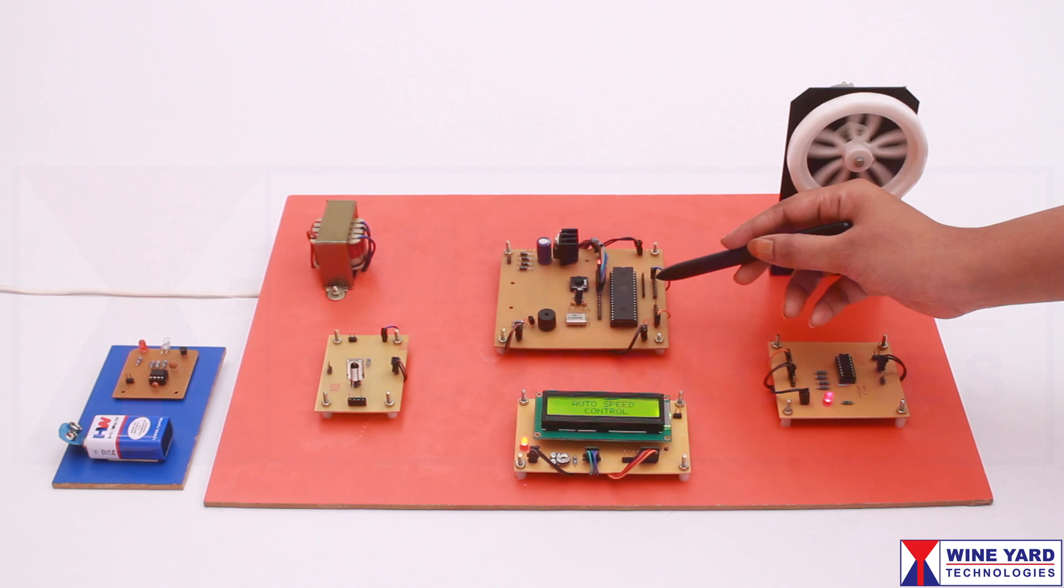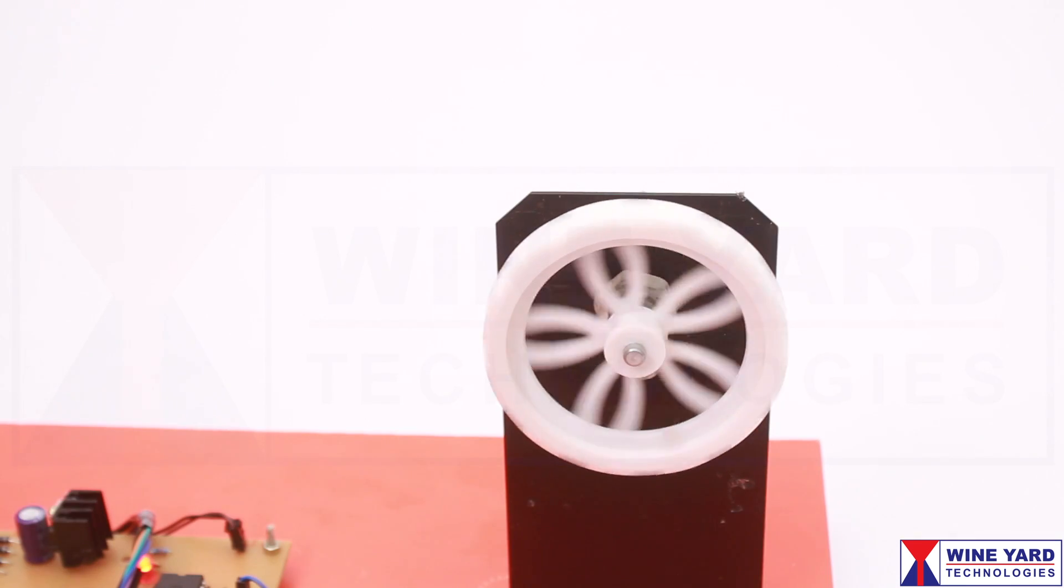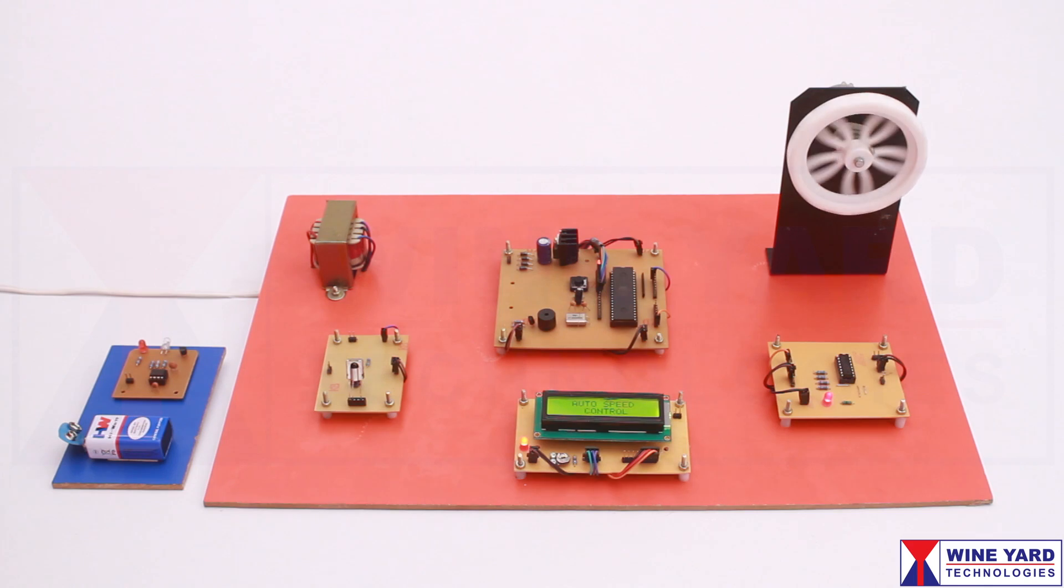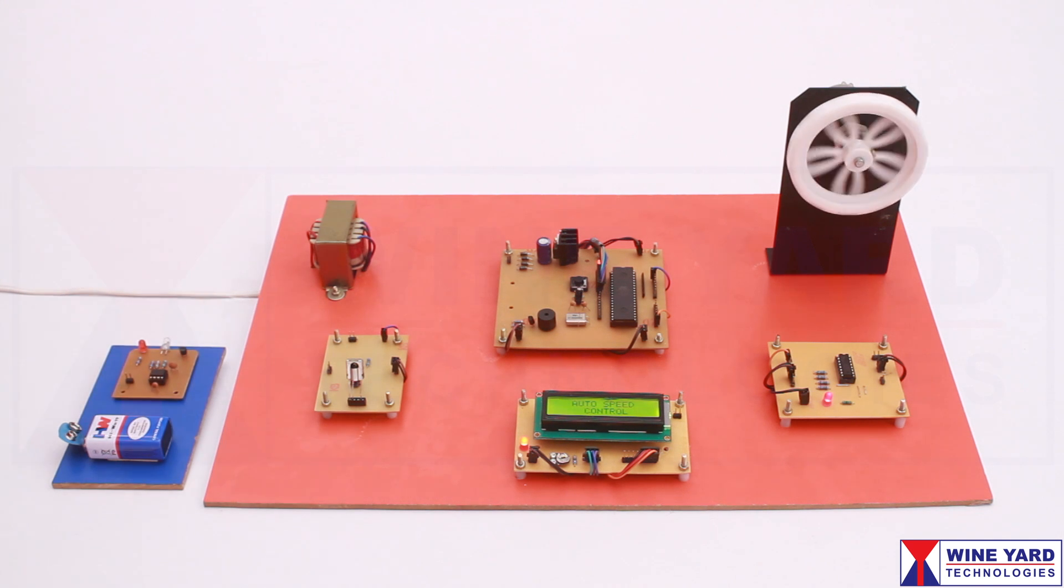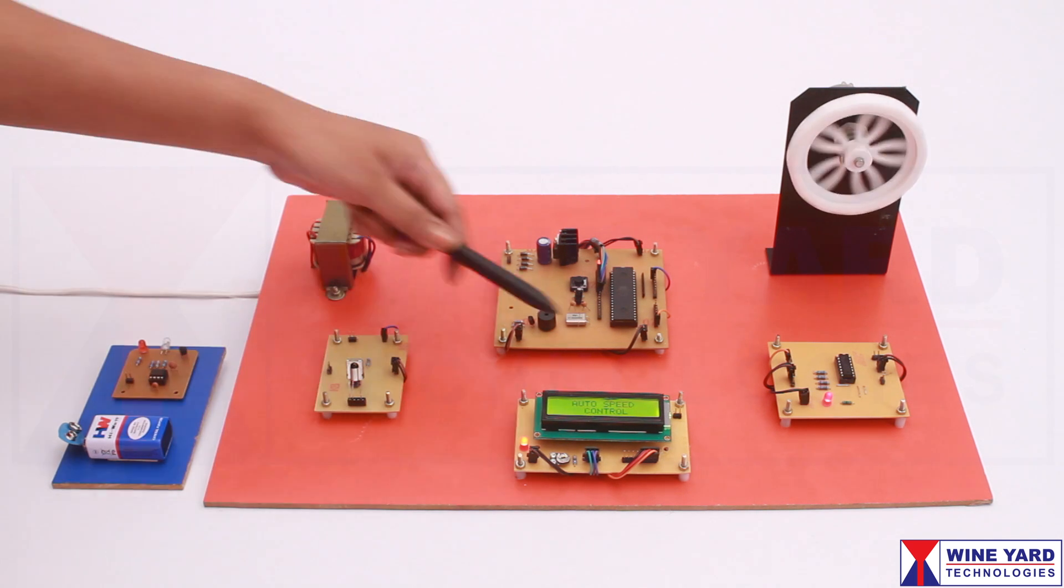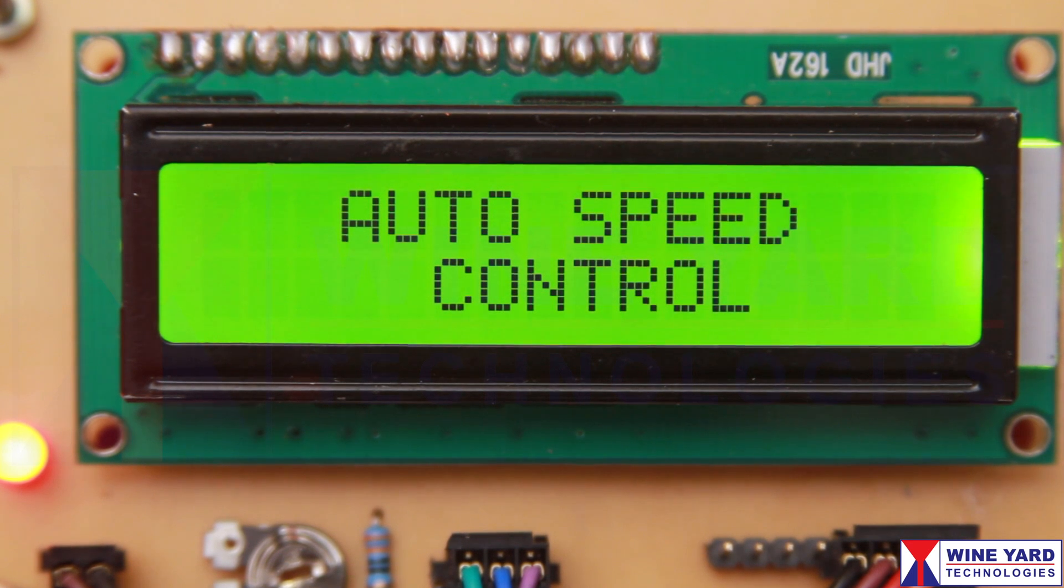The microcontroller generates a PWM signal to control the speed of the vehicle. The buzzer gives an audio alert on detection of the school zone. This 16x2 LCD displays the zone and speed details.